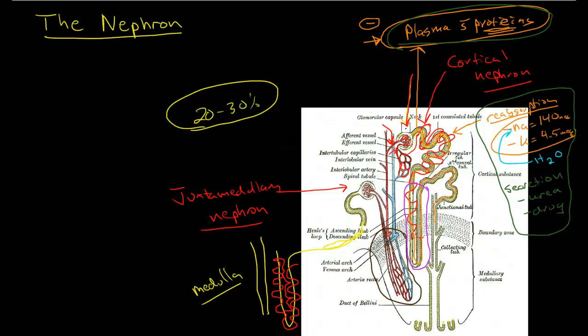But, interestingly enough, the urine that enters the loop of Henle and the urine that leaves the loop of Henle actually has about the same concentration, the same osmolarity. In fact, at the end of the loop of Henle, at this distal end of the loop of Henle, it is actually a little bit less concentrated. It's a little bit more hypotonic.